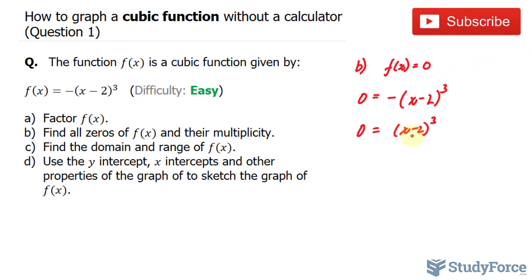To get rid of this power of 3, we take the cube root of both sides. Doing that on the left side makes it still zero, and on the right side we have x minus 2. Bringing this minus 2 over to the other side, we end up with x equals 2.